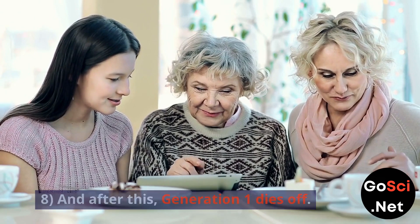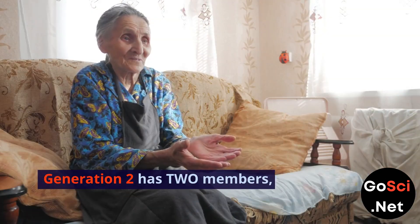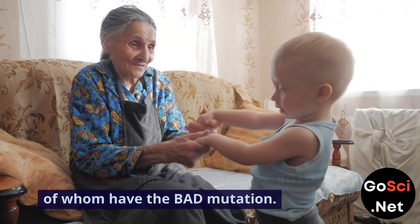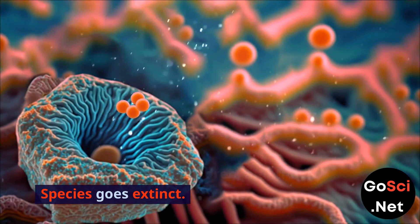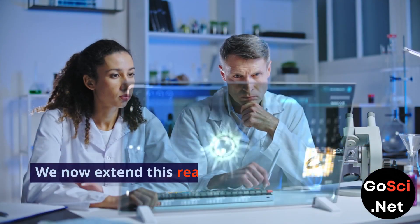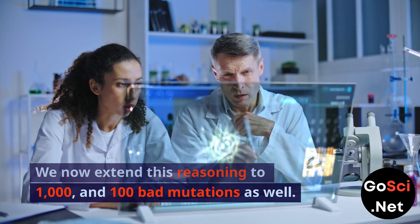And after this, Generation 1 dies off. Generation 2 has 2 members, both of whom have the bad mutation. So Gen 2 has no children, and the species goes extinct. We now extend this reasoning to 1,000 and 100 bad mutations as well.